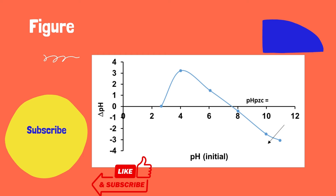So, the point of zero charge for activated carbon is 7.6. That means below 7.6, the surface is positively charged, which attracts negatively charged adsorbents. And on the other hand, beyond 7.6, the surface is negatively charged, which attracts anionic pollutants.